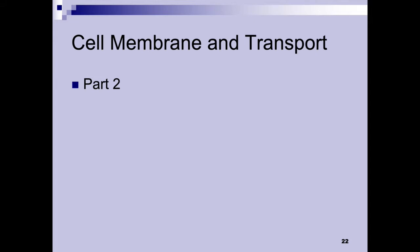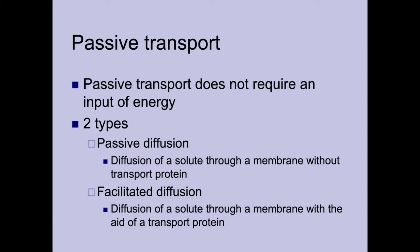Welcome to part two of chapter five, cell membrane and transport. We left off talking about diffusion, different parts of transport, and the creation of gradients — solute gradients and ion electrochemical gradients. These gradients are created through passive transport or active transport. In this part of the lecture we're going to talk about the different types of transport as well as some of the different ways that transport is carried out.